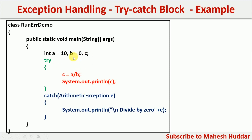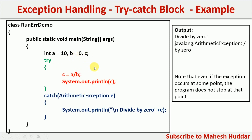Right now the value of b is equal to 0, so we will get an exception on this particular line. It will search for the catch block and the message — that is, divided by zero — will be displayed. After that, you will get a proper system-defined message. This is how we can handle exceptions with the help of try and catch blocks in Java.